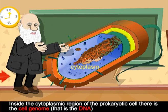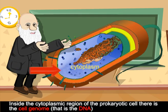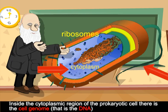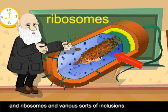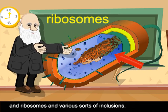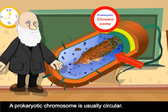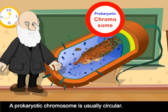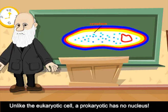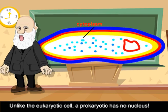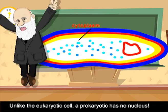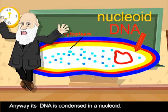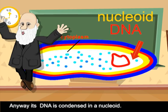Inside the cytoplasmic region of the prokaryotic cell there is the cell genome — that is, the DNA — and ribosomes and various sorts of inclusions. A prokaryotic chromosome is usually circular. Unlike the eukaryotic cell, a prokaryote has no nucleus; instead, its DNA is condensed in a nucleoid.